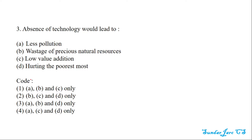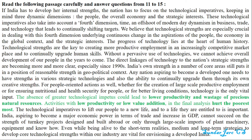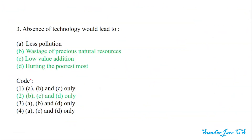Third question: The absence of technology would lead to — options: less pollution, wastage of precious natural resources, low value addition, hurting the poorest most. In the passage: 'the absence of greater technology impact could lead to lower productivity and wastage of precious natural resources. Activities with low productivity or low value addition in final analysis hurt the poorest most.' So the answer is wastage of precious natural resources, low value addition, and hurting the poorest most.